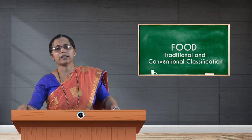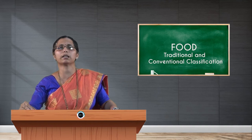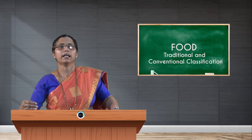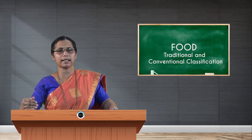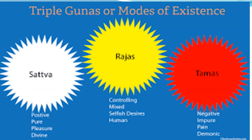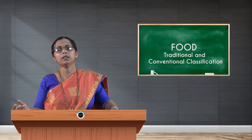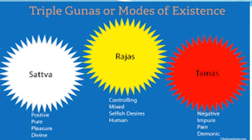The traditional texts dealing with food — especially the Bhagavad Gita — describe the effect of food on the body and classify food as Sattvic, Rajasic, and Tamasic. We may think these three are very different from one another, but it is not like that. It is a combination of all three in a food, but the dominant quality can be Sattva, Rajas, or Tamas.